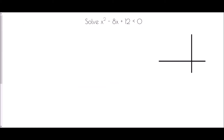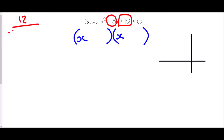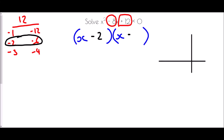One more: x squared take away 8x plus 12 is less than or equal to 0. To factorise, we want two numbers which multiply to make positive 12 but add to make negative 8. Since both must be negative, the pairs are: negative 1 and negative 12, negative 2 and negative 6, negative 3 and negative 4. The pair which adds to make negative 8 is negative 2 and negative 6. So the solutions are x equals 2 and x equals 6.